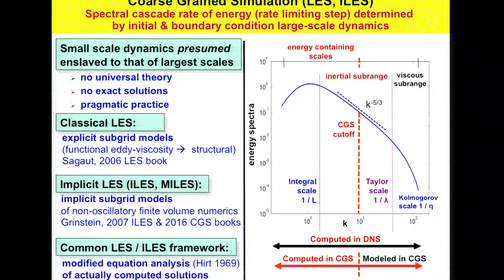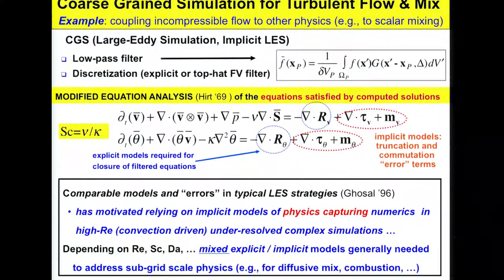Implicit LES, the field I've been heavily involved in, tries to focus on what the numerics can implicitly do, with the appropriate physics built into the numerics. A common framework to analyze both is the modified equation analysis, which focuses on the equations satisfied by the actual computed solutions.